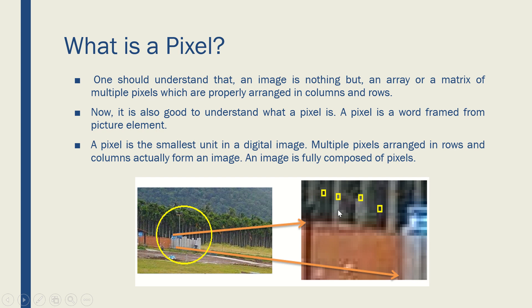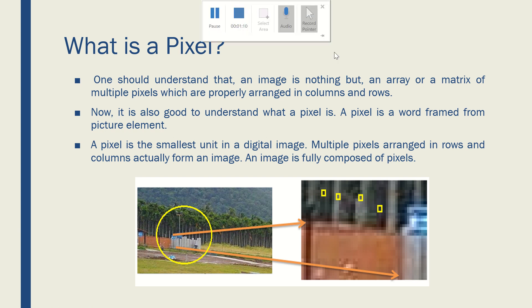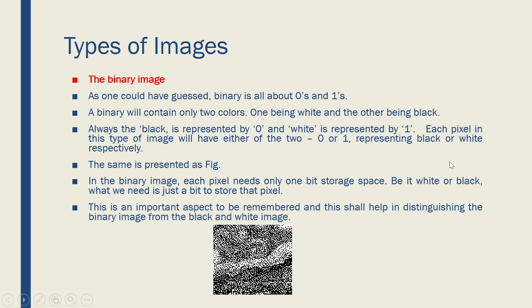When I extract just the pixels out of it by zooming in further, you can see that all these dots are pixels. I have highlighted a few pixels for your reference. So a pixel is the smallest unit in the digital image. Multiple pixels are arranged in a matrix format and they actually form an image. An image is fully composed of pixels. Now let us understand the types of images. There are multiple image types available and there is a standard confusion prevailing among beginners about which image is of what type, so I am going to clarify it very clearly.